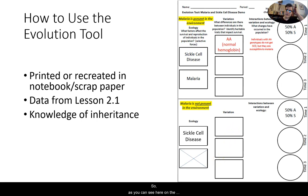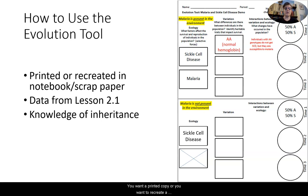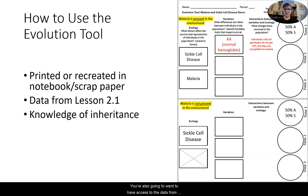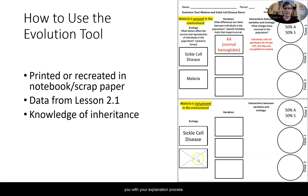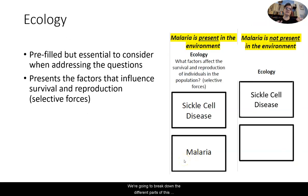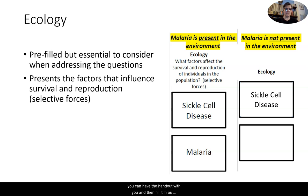As you can see here on the right side, this is the evolution tool for malaria and sickle cell disease demo. You'll want a printed copy or you want to recreate a version of it in your notebook or scrap paper. You're also going to want to have access to the data from lesson 2.1, which I do include here in the video. Bringing that background knowledge from the inheritance unit will help you with your explanation process. You can do this in one of two ways: fill in the handout as you go, or go through the video first and then fill it in afterward.